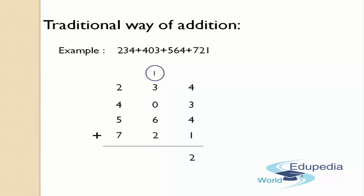After carrying, we start adding the digits in the tens place. 2 plus 6 is 8, 8 plus 0 is 8, 8 plus 3 is 11, and 11 plus 1 gives us 12. Again we got 12, and again there is one more column. So we cannot write the two-digit answer in the answer's place. Again, write 2 in the answer's place and carry the remaining 1 to the next column, that is, the hundreds place.